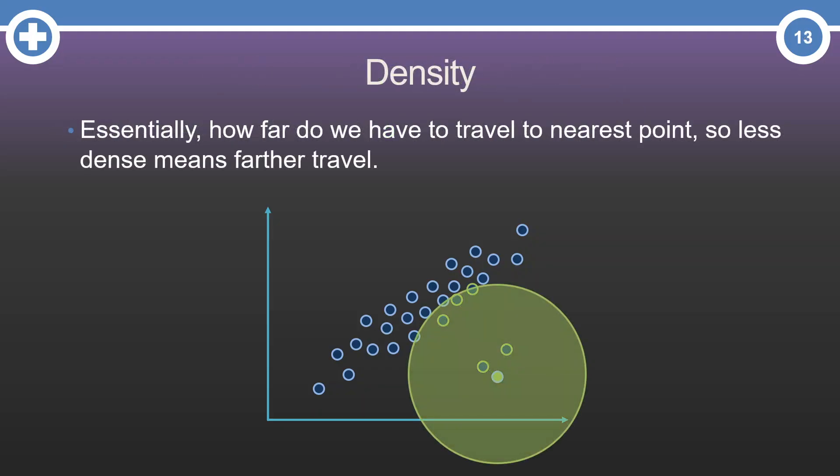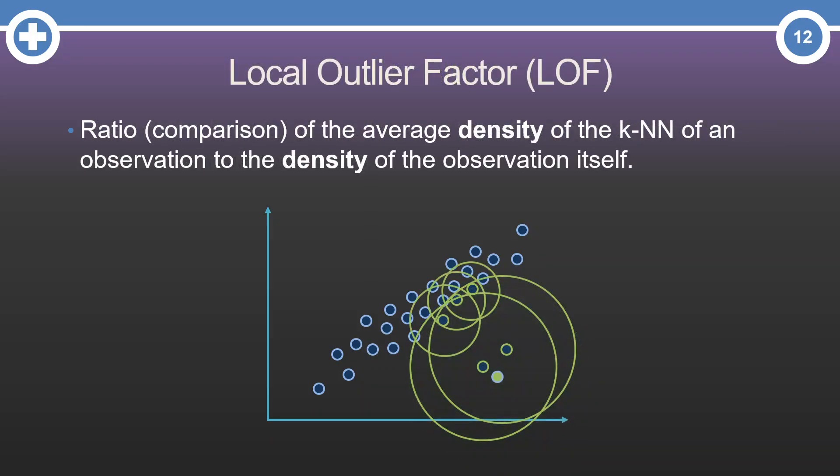Now, imagine a circle where the radius of the circle is the distance to the k-th, or 5th in our example, nearest neighbor. The area of that circle will represent the density of that observation. Remember, though, we have to compare that observation's density to the density of its nearest neighbors.